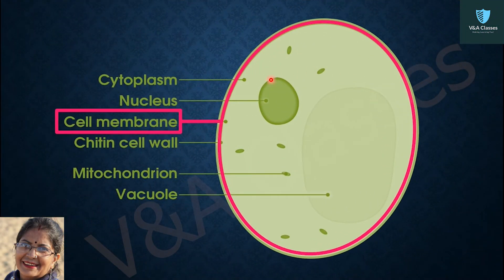This is a cell diagram and in the outermost which you have seen the pink boundary, it is called cell membrane or plasma membrane.